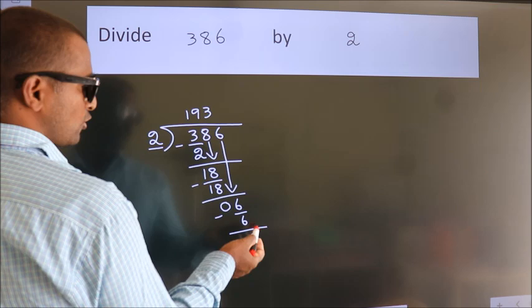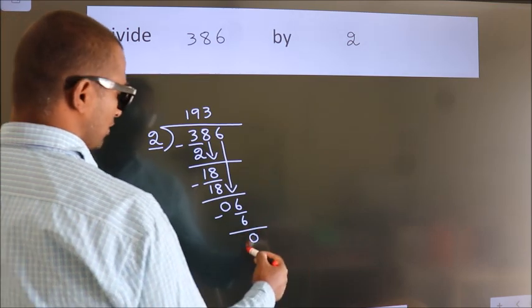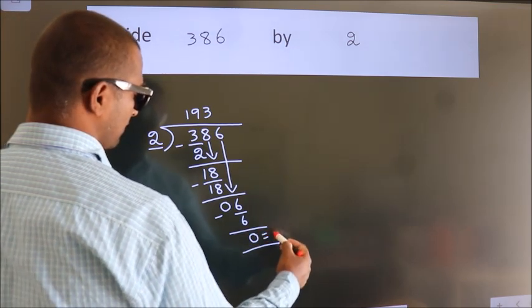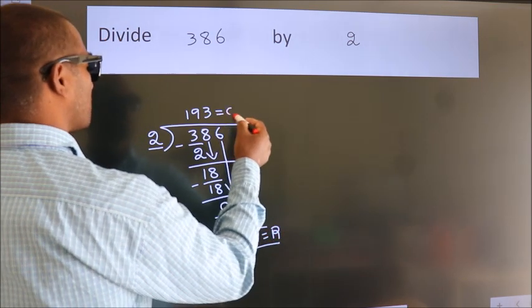No more numbers to bring it down. So we stop here. This is our remainder. This is our coefficient. This is our lineup.